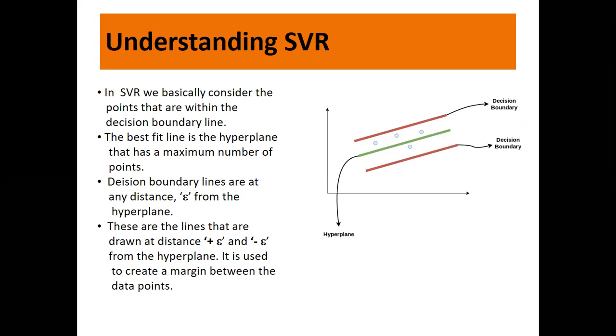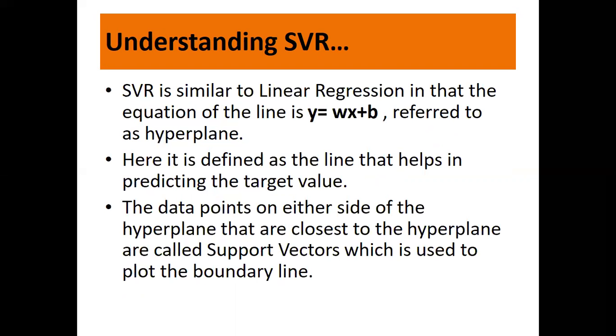Points above the hyperplane are classified as positive, and points below the hyperplane are classified as negative. In SVR we consider points that are within the decision boundary line.